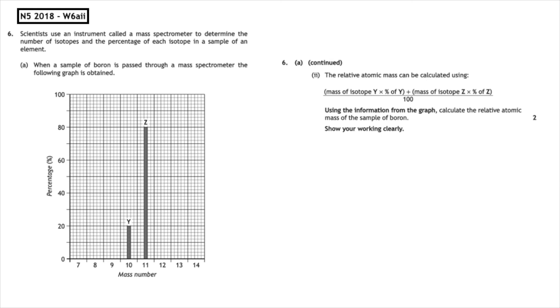This question asks us to use the information from the graph to calculate the relative atomic mass of the sample of boron and a formula is given for us to use. If we take the mass of isotope Y, which along the x-axis is 10, we extrapolate along the y-axis from the top of the bar, and that tells us that we have a percentage of 20.